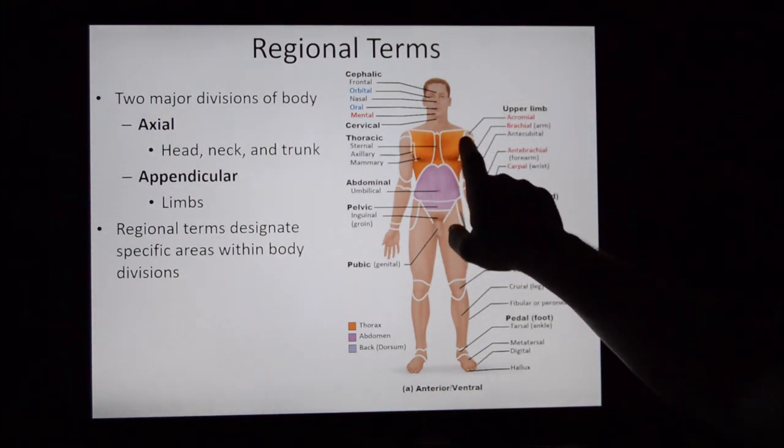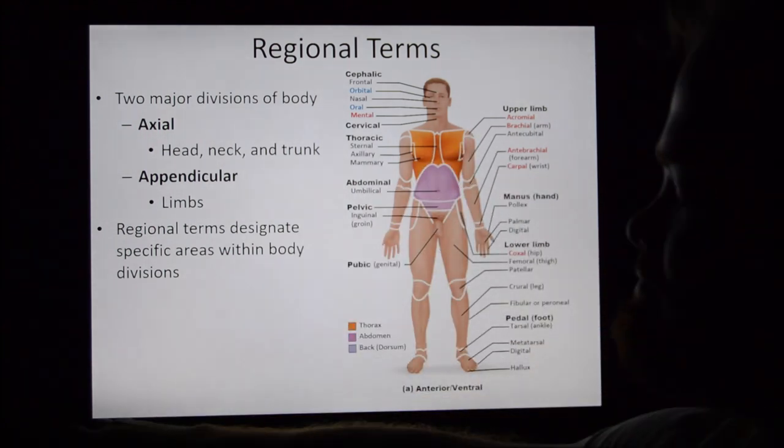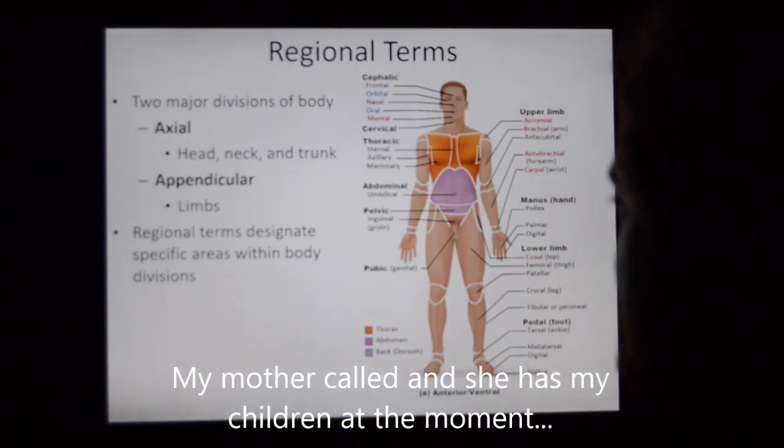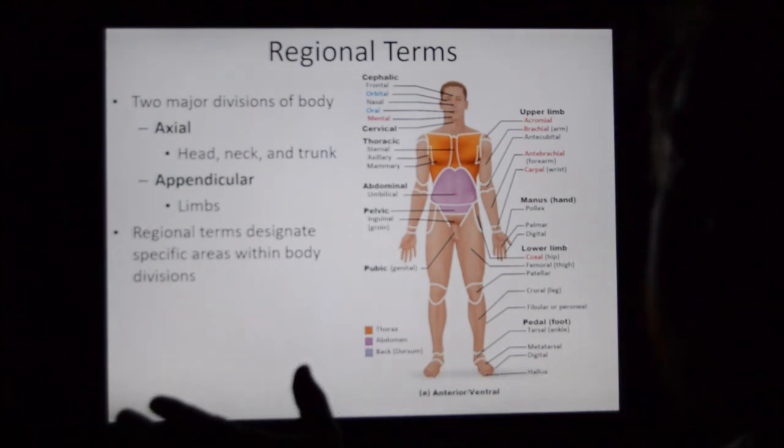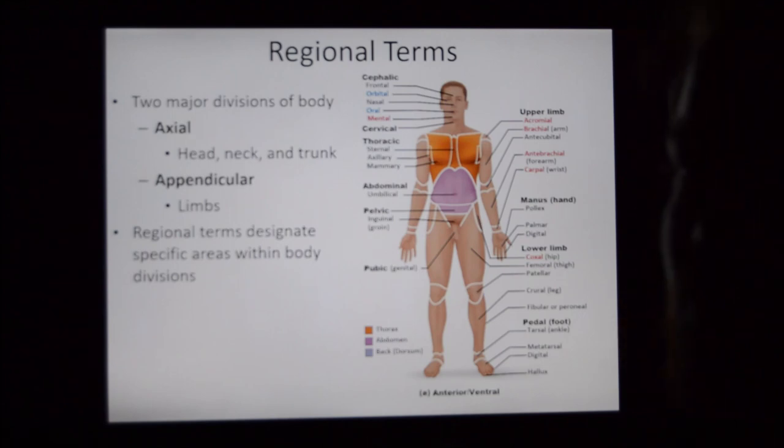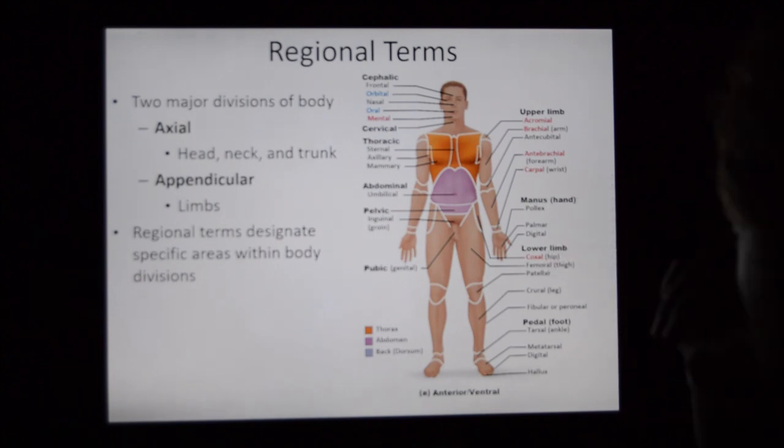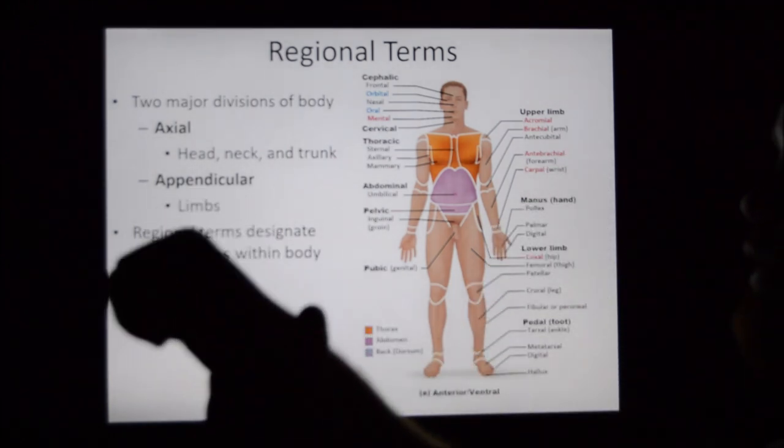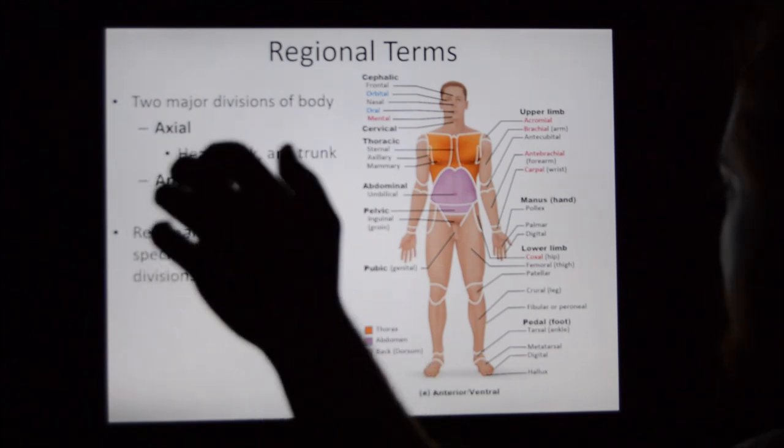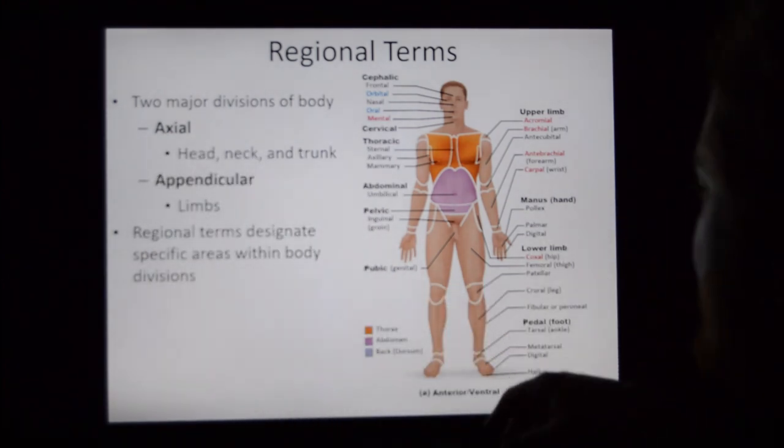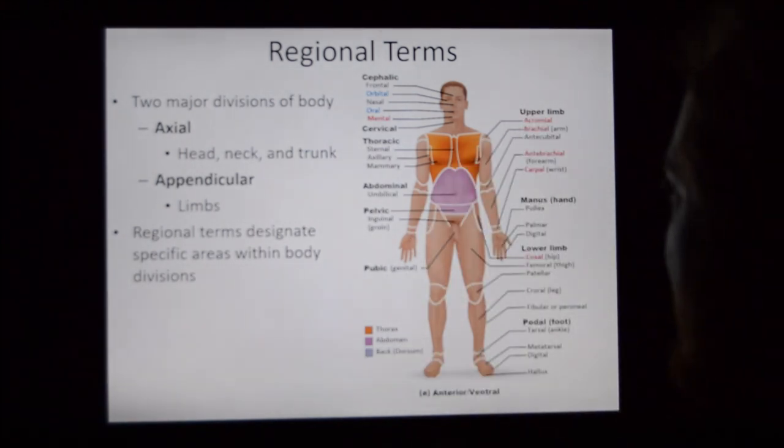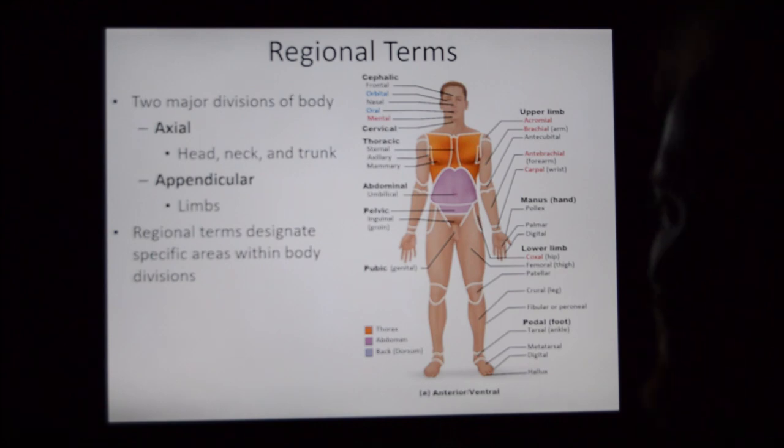Acromial: you have an acromial process on a bone. Brachial: this is where your biceps and triceps are. Carpal: your carpal bones are there, so you have flexor carpi muscles that cross through the carpals. All these terms are good terms. Knowing them will help.